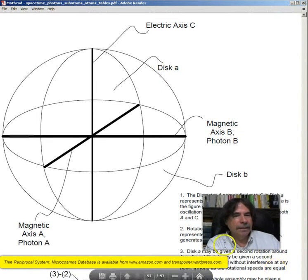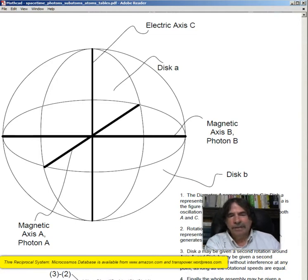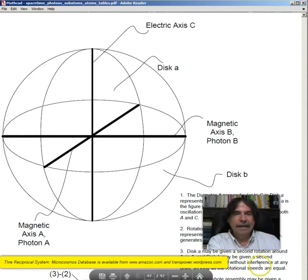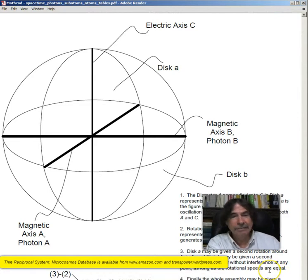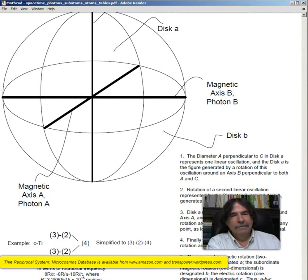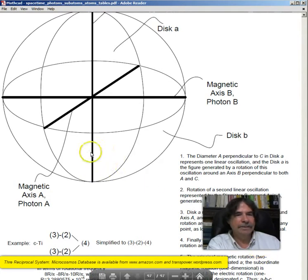The rotation of the second linear oscillation, which is the second photon illustration, represented by the diameter B around the axis A, generates the disk B. This disk A may be given a second rotation around the axis A, and disk B may be given a second rotation around the axis B, without interference at any point as long as the rotational speeds are equal. Finally, the whole assembly may be given a rotation around the electric axis C.